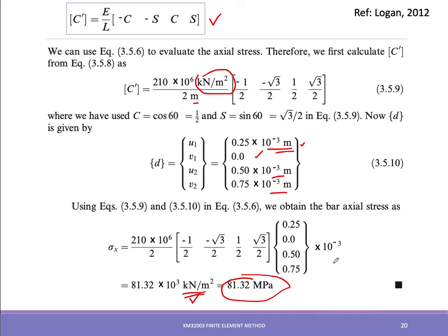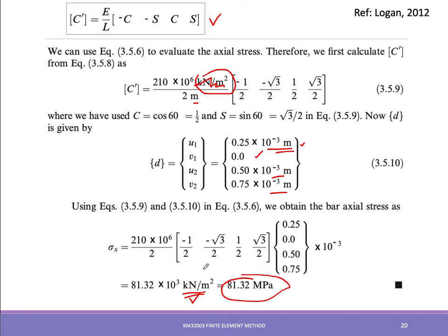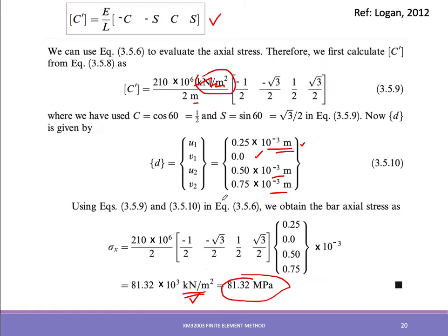Computers don't inherently know units, so everything must be input consistently. If you use kilo-Pascal for Young's modulus, the output stress will be in kilo-Pascal. The user must interpret the result accordingly. Always ensure unit consistency throughout the calculation so the output is physically meaningful.